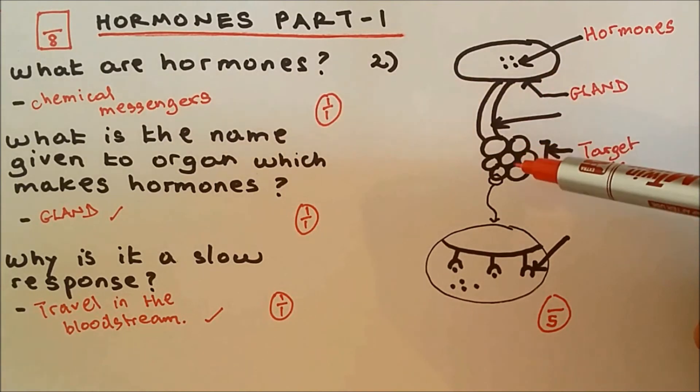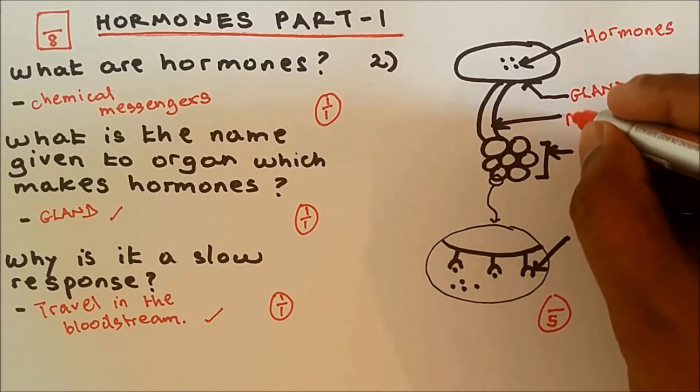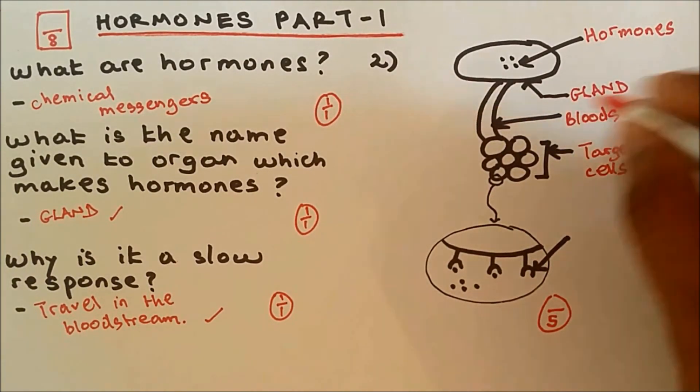If the hormone is to travel from the gland to the target cells, it can only be done by the bloodstream. So this is either blood vessel or bloodstream. So bloodstream.